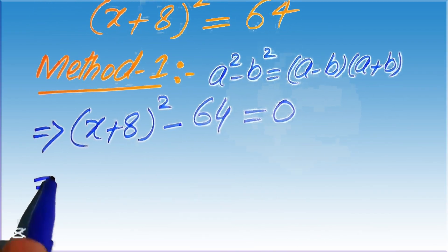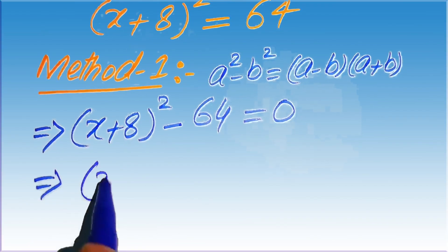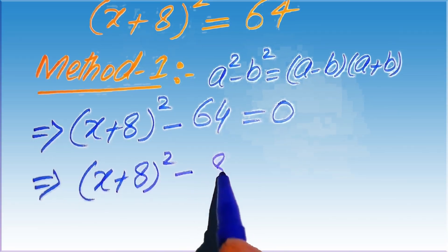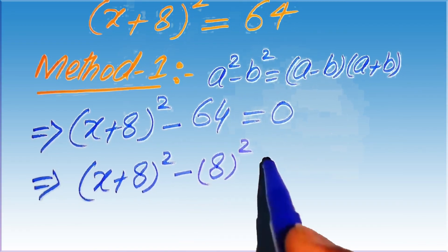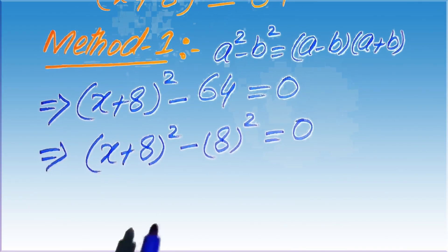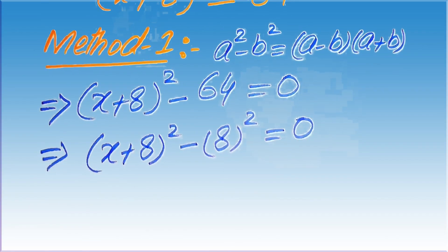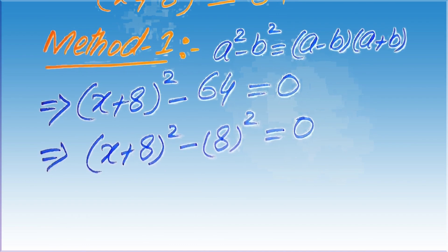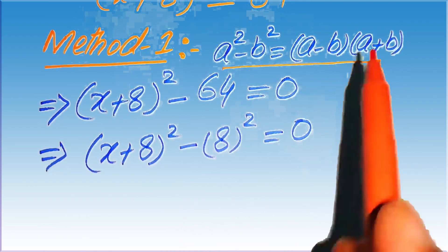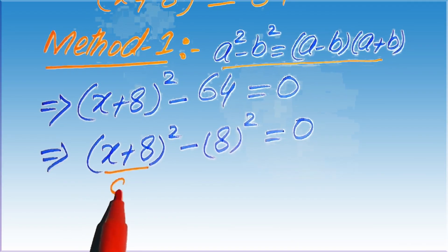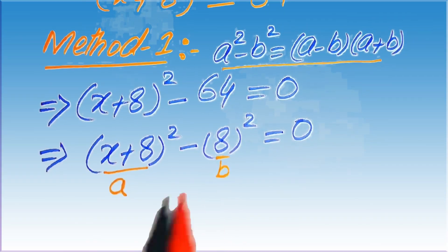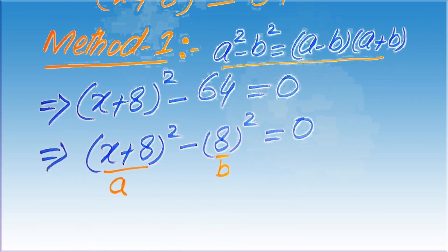We rewrite 64 as 8 squared, so the equation becomes x plus 8 squared minus 8 squared equals 0. Here, a equals x plus 8, and b equals 8.